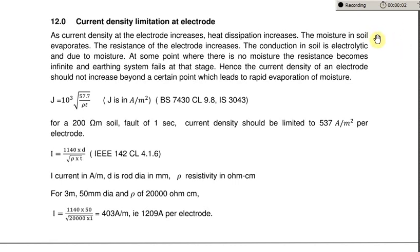Current density limitation at electrode. These electrodes have to carry the fault current and dissipate it to the ground. What happens when the fault current gets close to the ground?